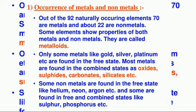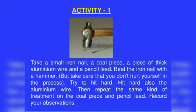Only some metals like gold, silver, and platinum are found in the free state. Most metals are found in the combined state as oxides, sulfites, carbonates, silicates, etc. Some non-metals are found in the free state like helium, neon, argon, etc., and some are found in both free and combined states like sulfur, phosphorus, etc.